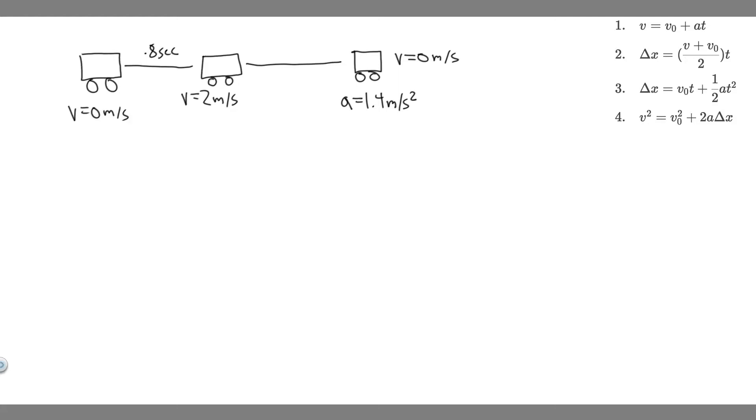In this problem, we're told a commuter backs her car out of her garage with an acceleration of 1.4 meters per second squared. A, how long does it take her to reach a speed of 2 meters per second? And B, if she brakes to a stop in 0.8 seconds, what is her deceleration?